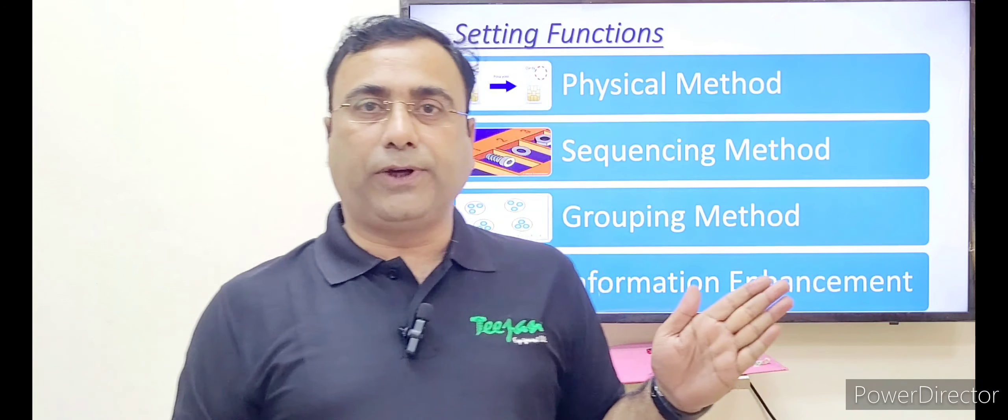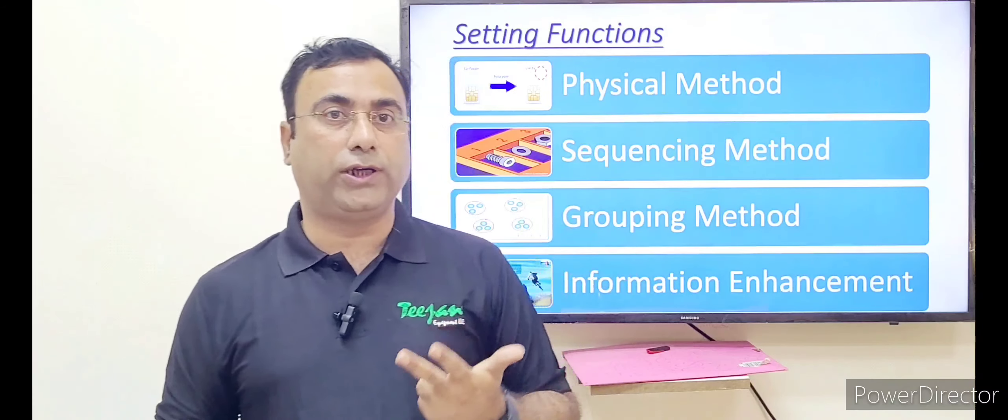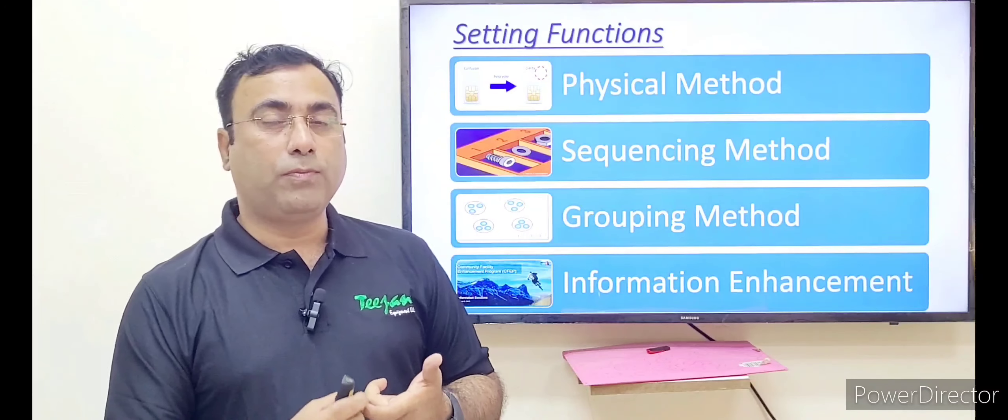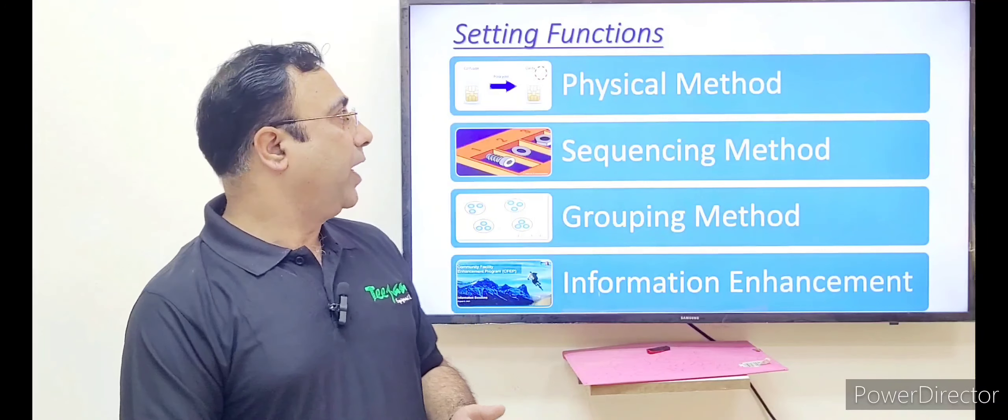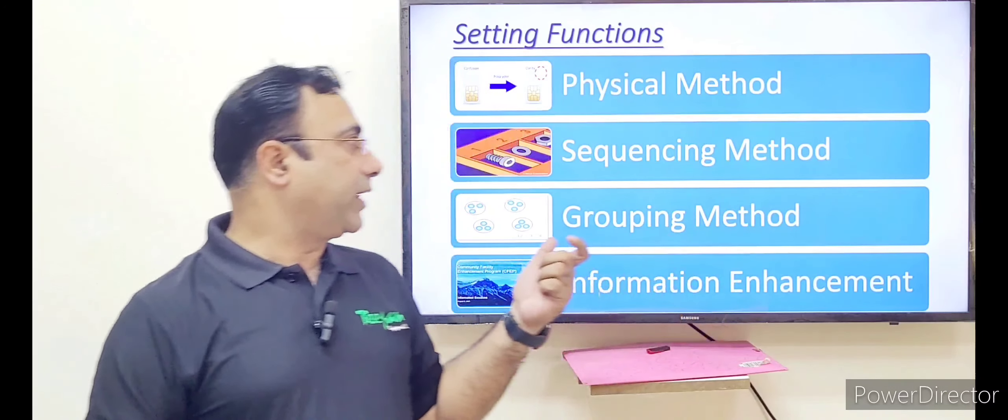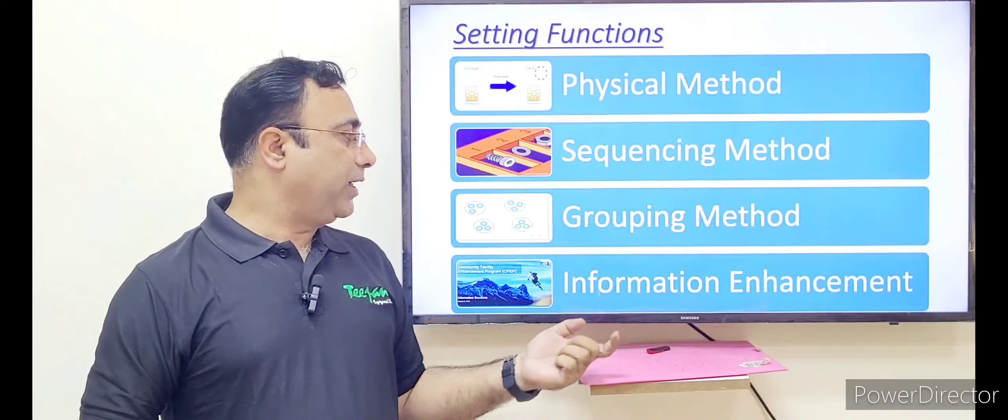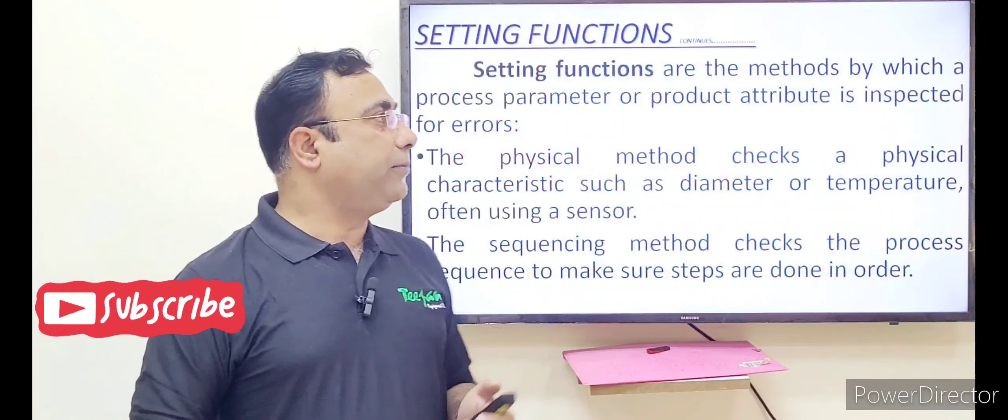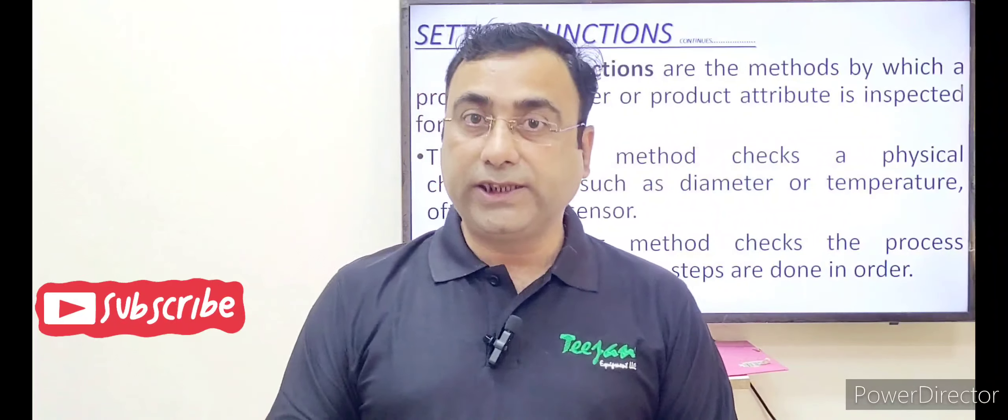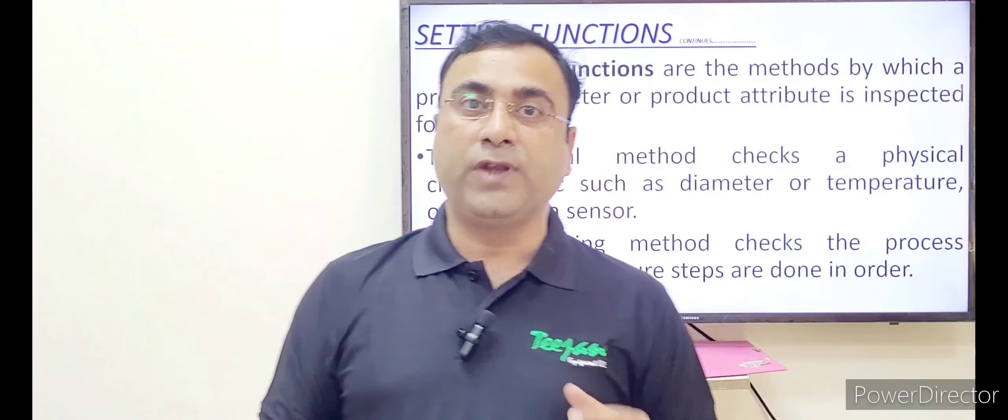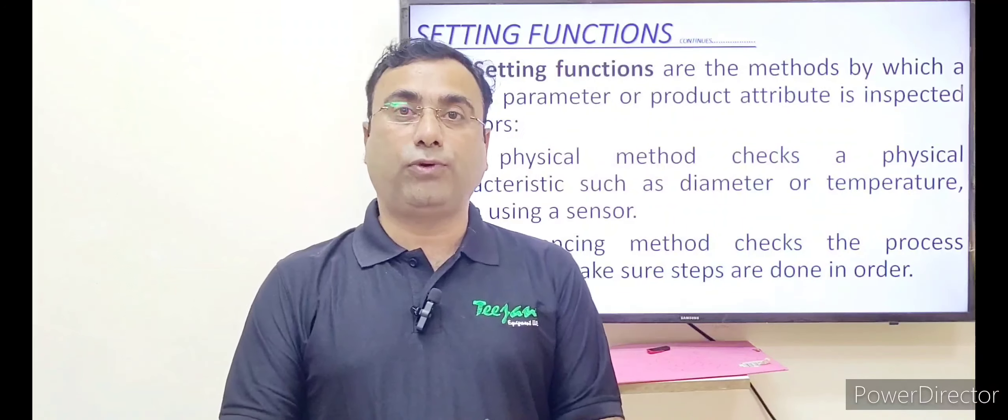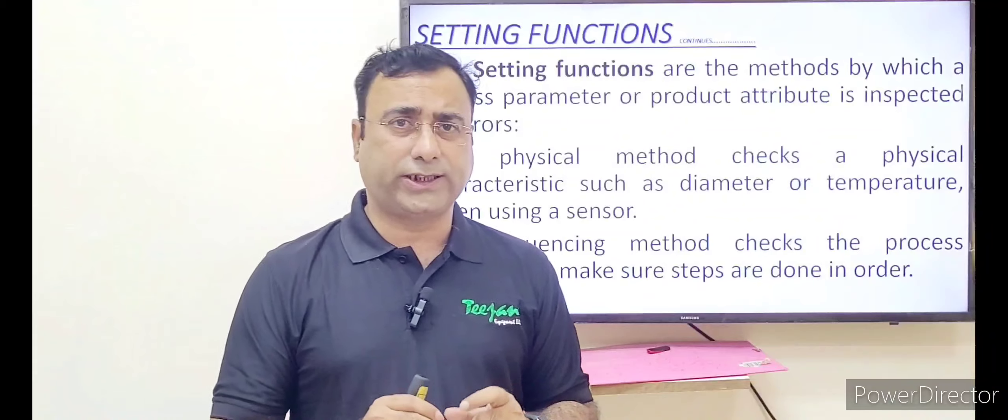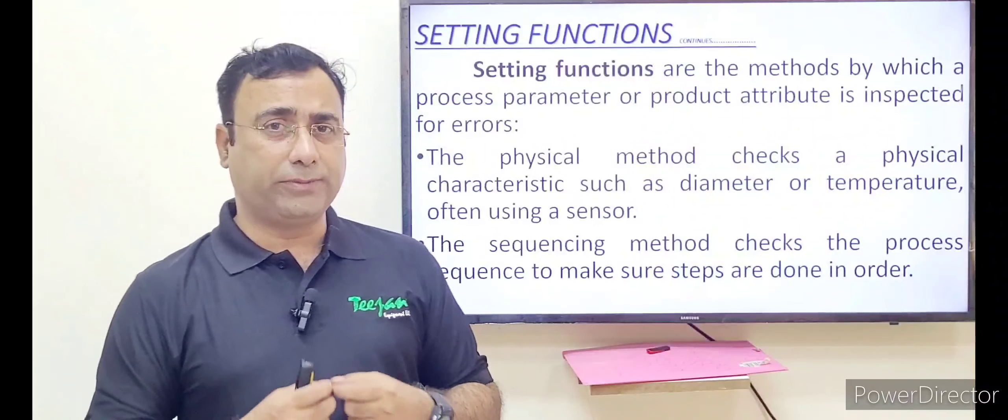Thereafter, after all these three functions, we have two more functions that is called setting function and regulatory function. Setting function mostly used in all the process and they are physical method. The first one is physical method. Physical method is like when you are producing your product, you have to check it physically, what is its characteristic as well as the dimension. Physically you are checking the dimension, maybe radius, maybe length, maybe the weight.